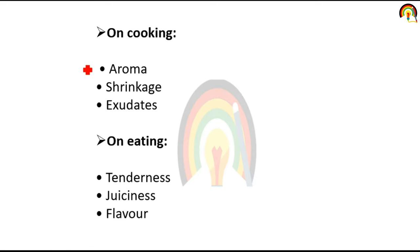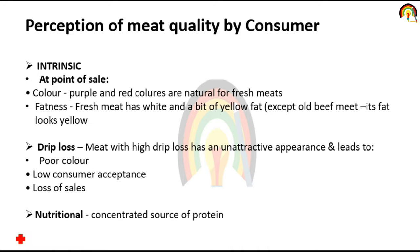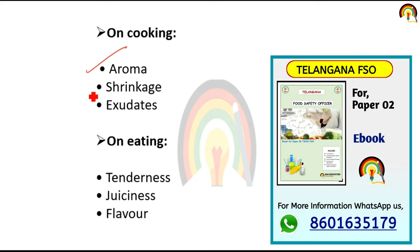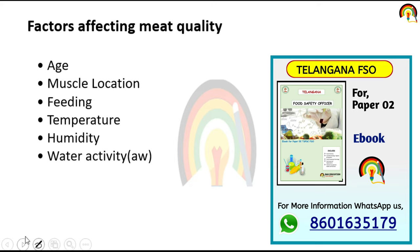Perception of consumer meat quality on cooking includes mainly aroma, shrinkage, and exudates. On eating: tenderness and flavor. Factors that affect meat quality include muscle location, feeding, temperature, humidity, and water activity.